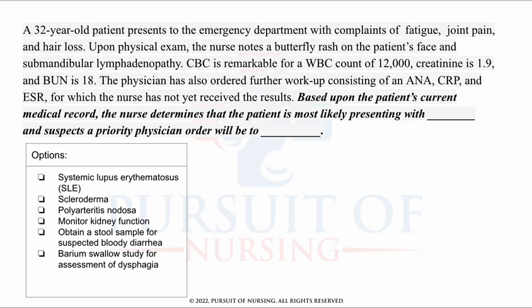This is a drag and drop style question that will test your knowledge of physiological integrity. A 32-year-old patient presents to the emergency department with complaints of fatigue, joint pain, and hair loss. Upon physical exam, the nurse notes a butterfly rash on the patient's face and submandibular lymphadenopathy. A CBC is remarkable for a white count of 12,000, creatinine 1.9, and BUN of 18. The physician has also ordered further workup consisting of an ANA, CRP, and ESR, for which the nurse has not yet received the results. Based upon the patient's current medical record, the nurse determines that the patient is most likely presenting with blank, and suspects a priority physician order will be to blank.